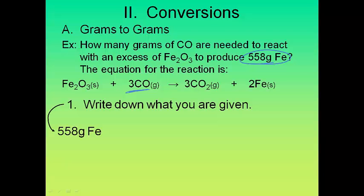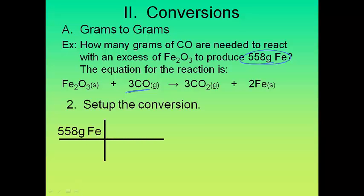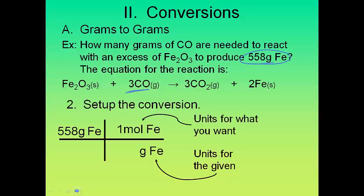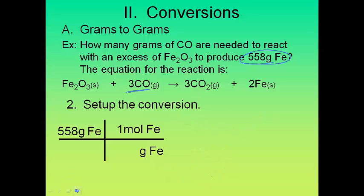So the first thing you always do is write down what you're given, 558 grams Fe. When in doubt, mole it out. That's right. So I'm going to set up my little conversion. So I'm in grams. I can't work in grams. So I've got to convert to moles. On the bottom are going to be units for what I have and on the top are the units for what I want. So I want to convert to moles. Now, where am I going to go to find the information for my given? Well, I'm going to go back to that periodic table. And I look at the periodic table and the weight for iron is 55.85 grams.